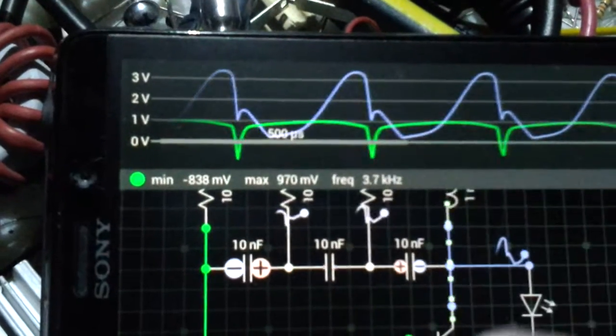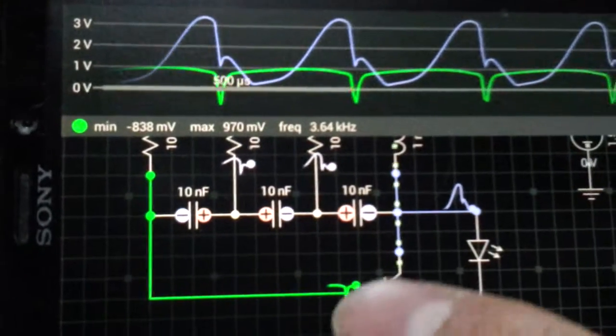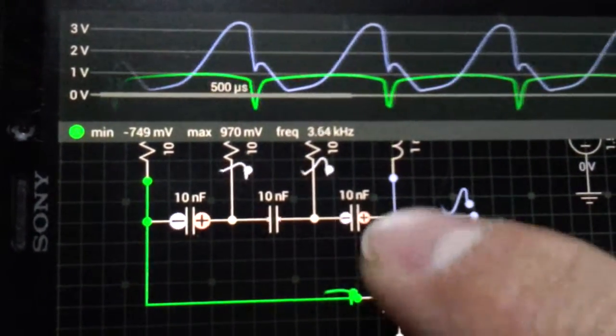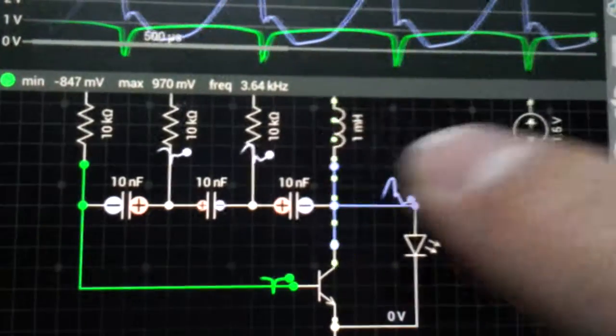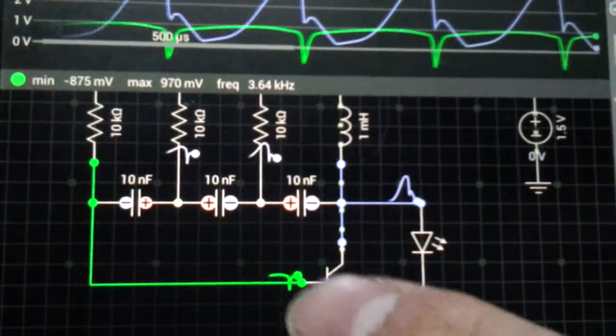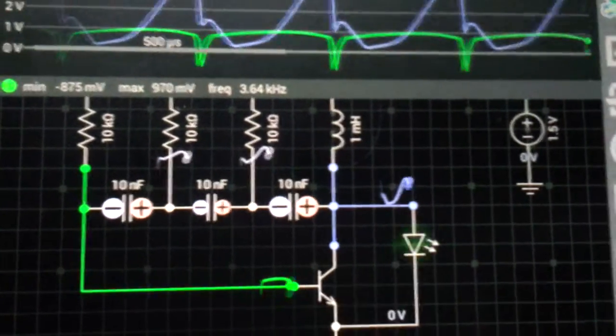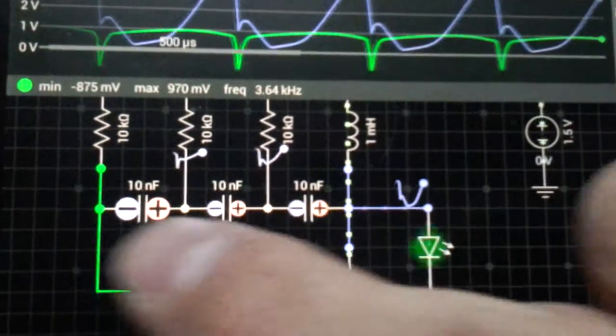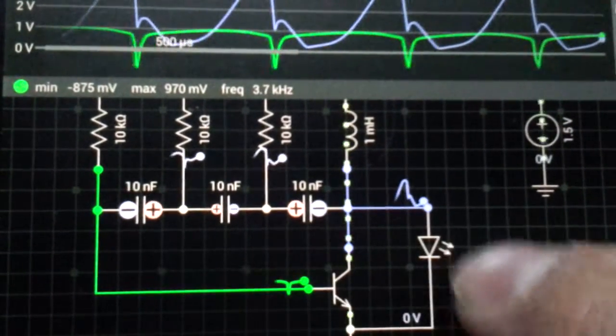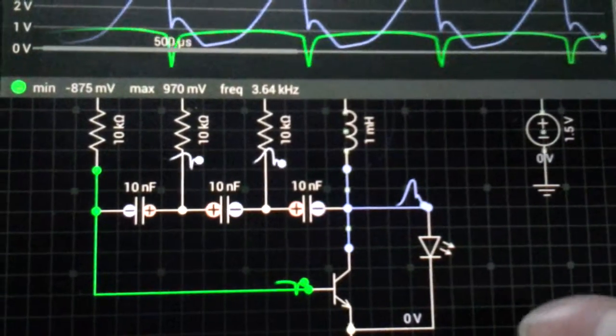So it charges the coil, which as you can see here, the current flow in the transistor. And on the little peak, it simply discharges all three capacitors. And that's exactly when the LED turns on.